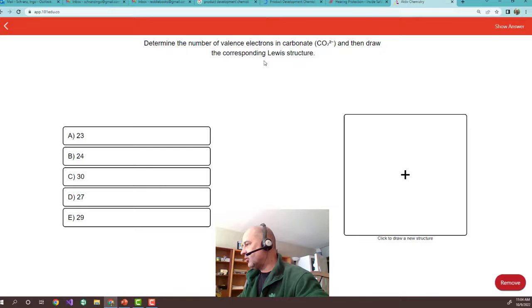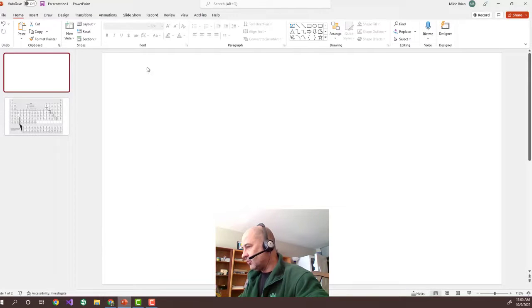Like here, it's asking you to determine the number of valence electrons in carbonate and draw the corresponding Lewis structure. Alright, so before you do this, I suggest you draw the structure.